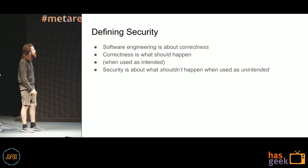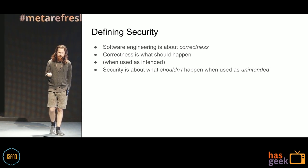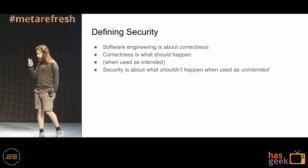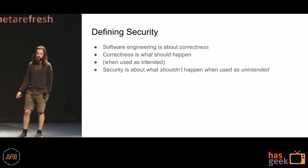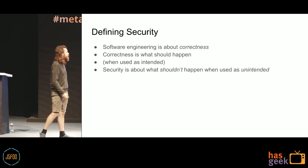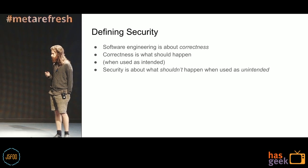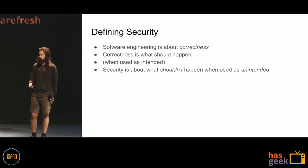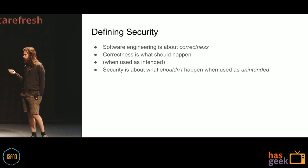Defining security: software engineering is about correctness — did it do what should happen when used as intended? But security is about what shouldn't happen when it's used in unintended ways, which usually isn't defined. In security, we have to figure out if the thing that happens when you use it as unintended is something we want to happen or not.